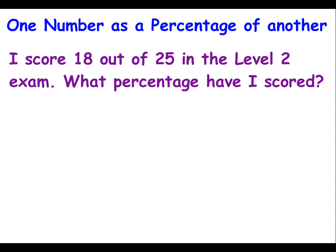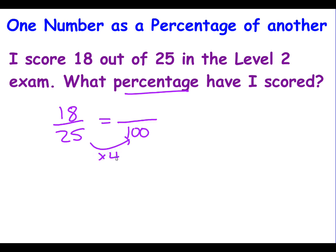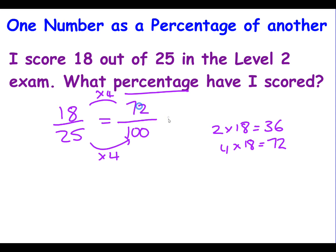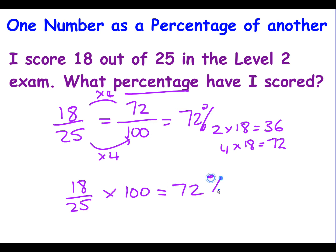Here's another section A question: I score 18 out of 25 in the level 2 maths exam — what percentage have I scored? I need a denominator of 100. How do I get from 25 to 100? Multiply by 4. So multiply the numerator by 4: two 18s are 36, so four 18s are 72. That's 72 over 100, which is 72%. On a calculator, put it in and press equals to get 72%.